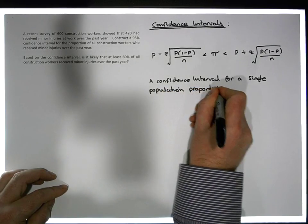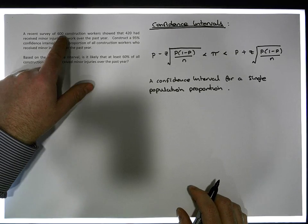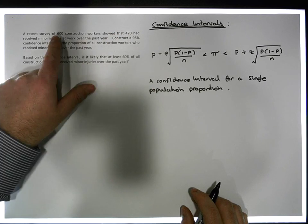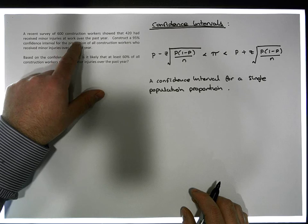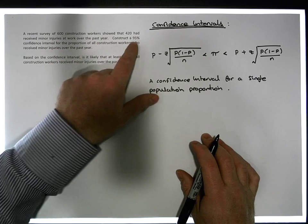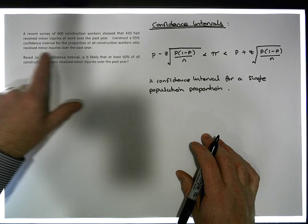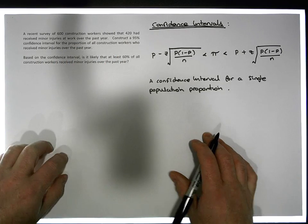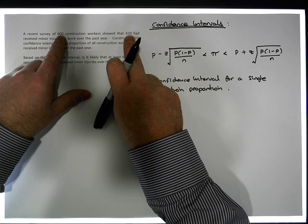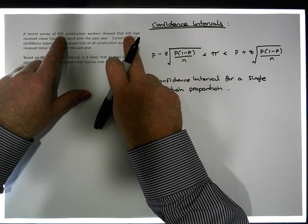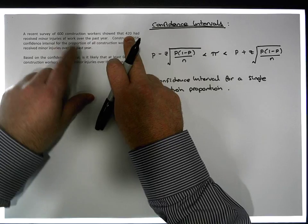So what we have is a particular scenario here to do with construction workers. A recent survey of 600 construction workers showed that 420 of the 600 workers had received some form of minor injury at work over the past year. We know that 420 of the 600 workers received an injury, and that's our sample information.